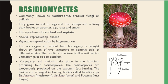Asexual reproduction is absent in Basidiomycetes, while vegetative reproduction is by fragmentation. Sex organs are also absent, but plasmogamy is brought about by fusion of two vegetative or somatic cells of different strains. The resulting structure is dikaryotic, which ultimately gives rise to a basidium.